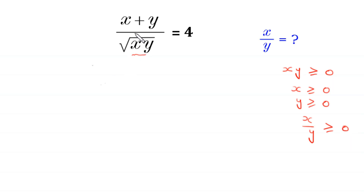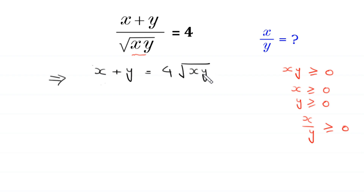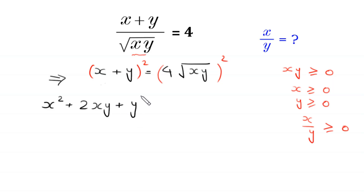If we multiply both sides of this equation by square root of x times y, then this implies that x plus y is equal to 4 times square root of x times y. From here, we take the square of both sides. This gives x plus y whole squared, which equals x squared plus 2xy plus y squared, equal to 16 times x times y, since the square cancels the square root.